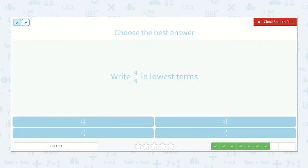9 sixths. Let's write that in lowest terms. 9 sixths. Well, I know I could divide the top and bottom by a number. I could divide the top and bottom by 3. And I will end up with 9 divided by 3 is 3. 6 divided by 3 is 2.